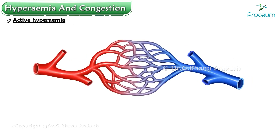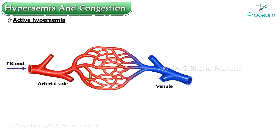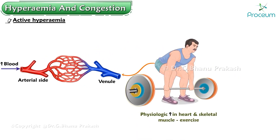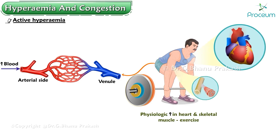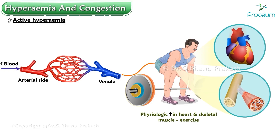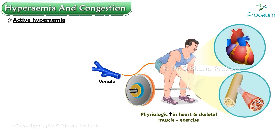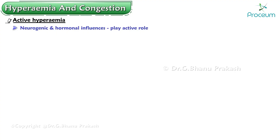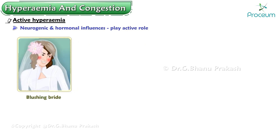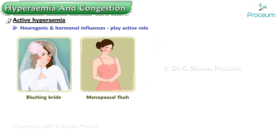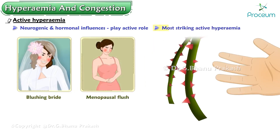Active hyperemia is the increased blood on the arterial side of the circulation. It is usually a physiologic response to increased functional demand, as in the heart and skeletal muscle during exercise. Neurogenic and hormonal influences also play a role — for example, the blushing bride and the menopausal flush.